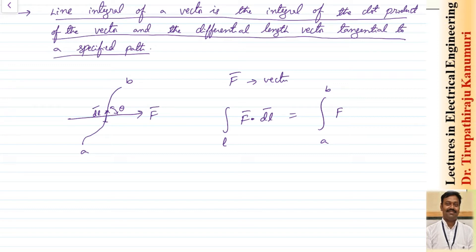The dot product is nothing but projecting f in the direction of dl, as we have already seen. So this can be written as the magnitude of f times cos theta — that is, the component in the direction of l — multiplied by dl, where dl is only the differential length, not a vector. In this way we can calculate the line integral.